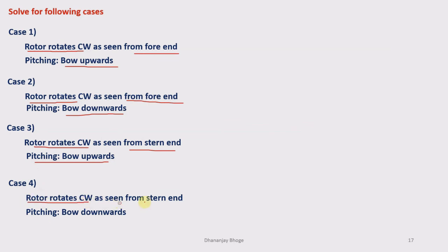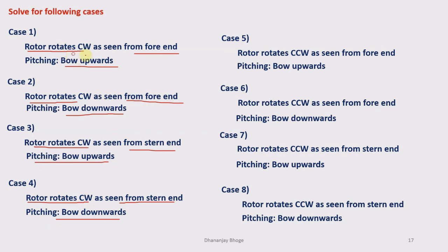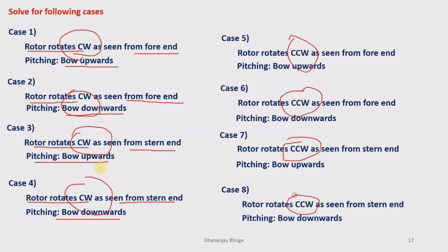I have taken only one example, but you can solve eight different cases: rotor rotates clockwise as seen from the fore end with bow moving upward; clockwise from the fore end with bow moving downward; clockwise from the stern end with bow moving upward; clockwise from the stern end with bow moving downward; and four more cases by changing the direction of rotation from clockwise to counterclockwise. Please solve these eight cases and obtain the effect of gyroscopic couple on the ship during pitching. Thank you.